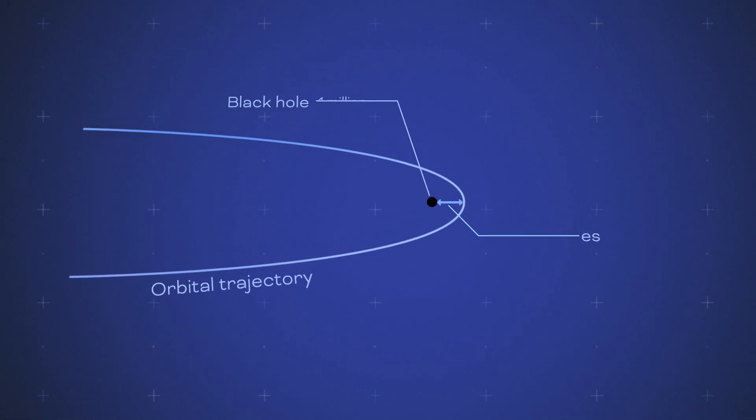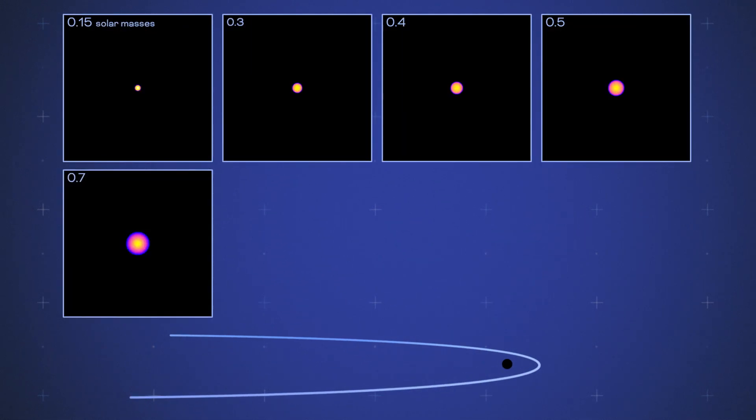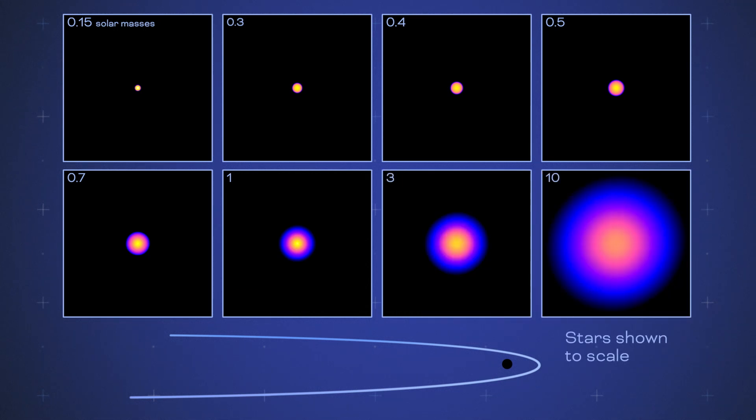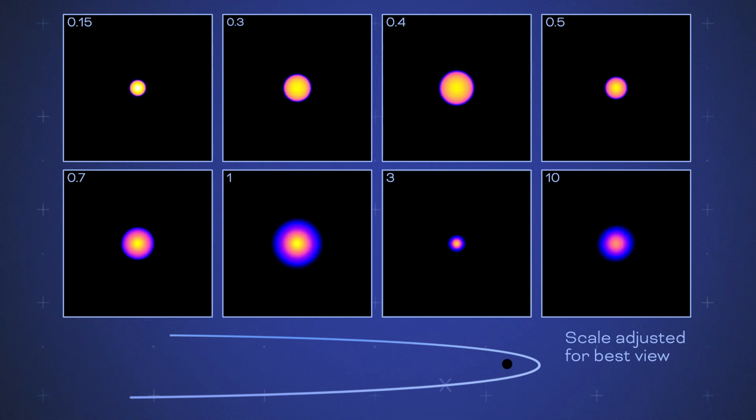The model stars range from about one-tenth to ten times the sun's mass. The colors reflect their densities, from the lowest shown in blue to the highest in yellow.